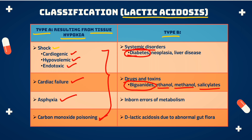Lactic acidosis is also seen in some inborn errors of metabolism. Apart from that, if there is abnormal gut flora in the intestine, this can lead to D-lactic acidosis.